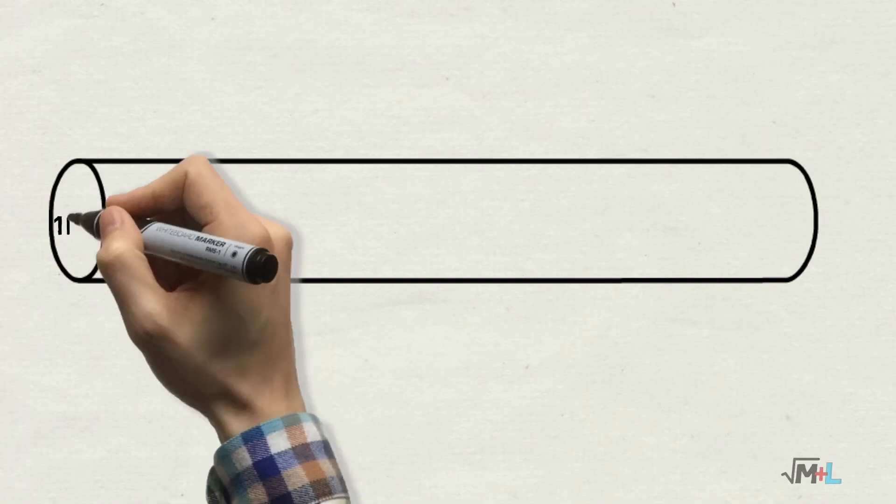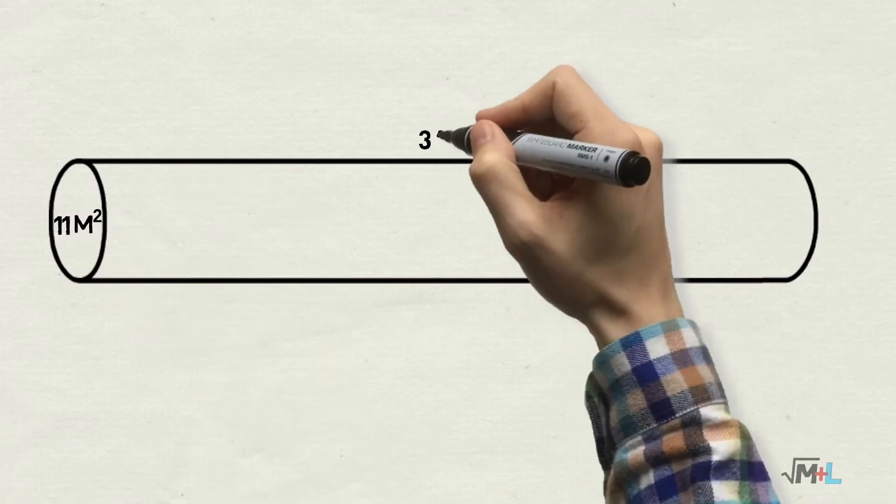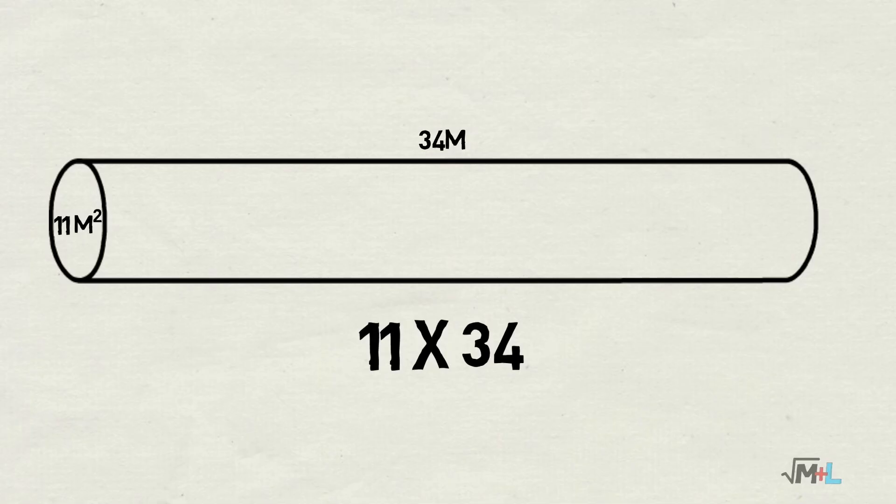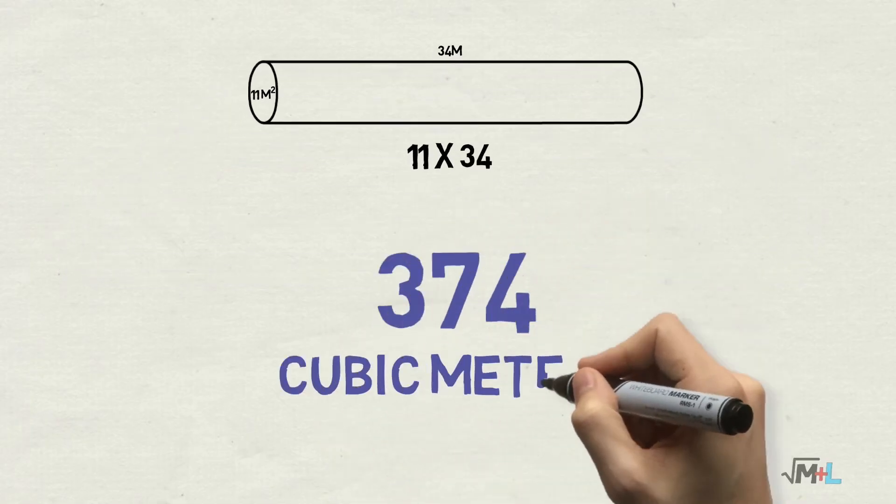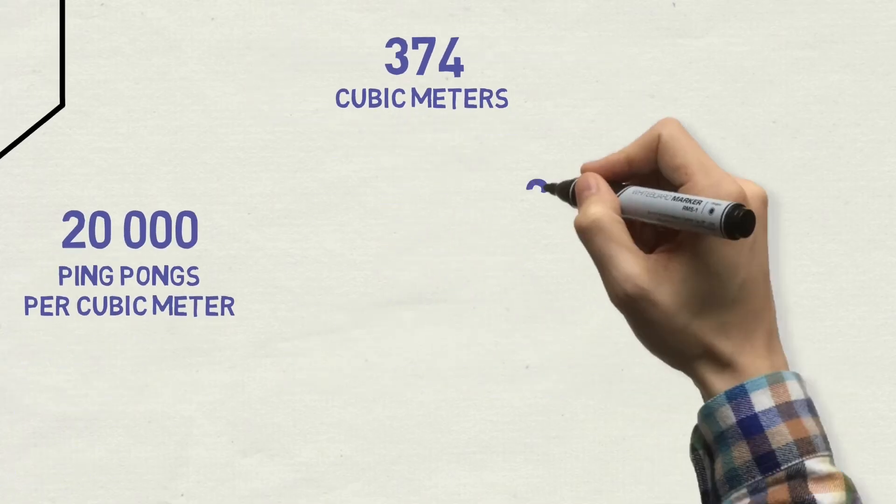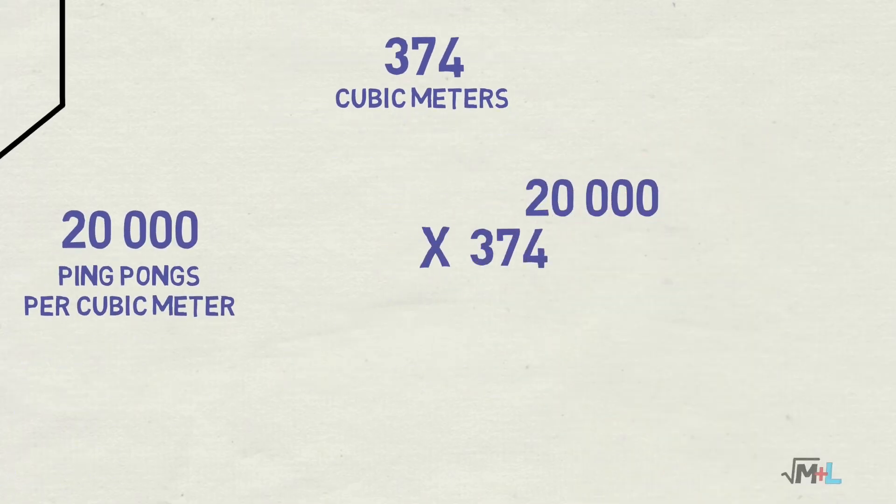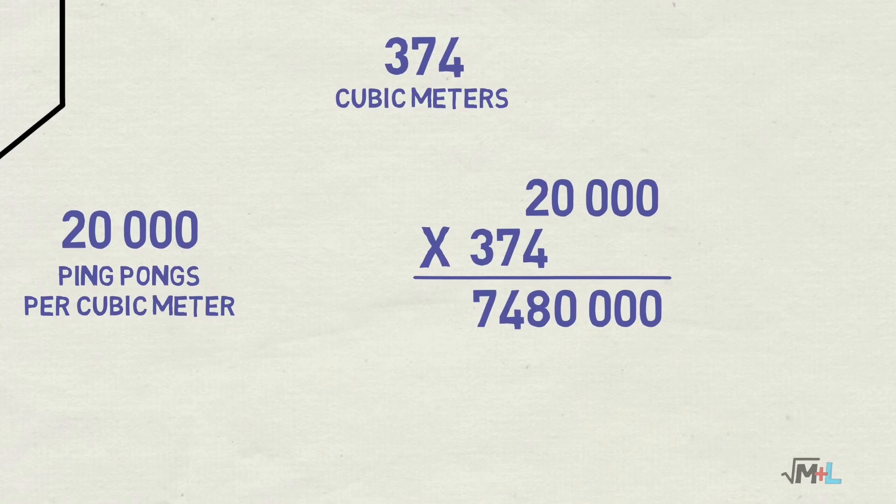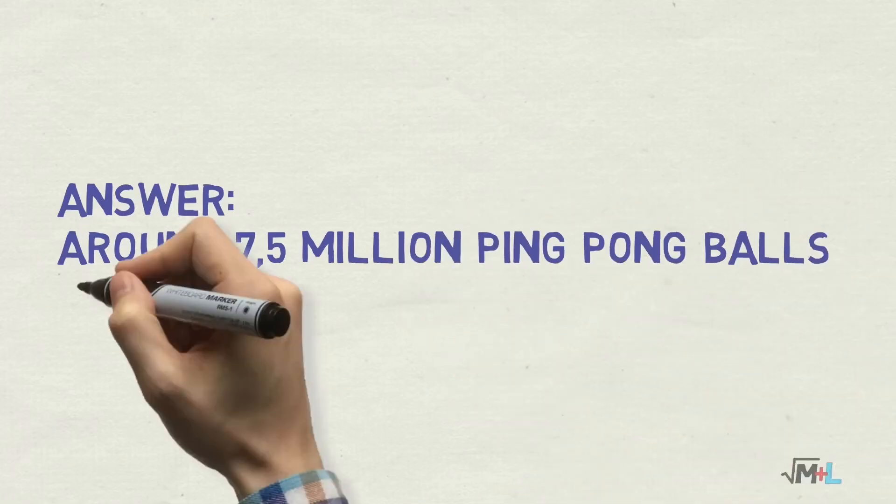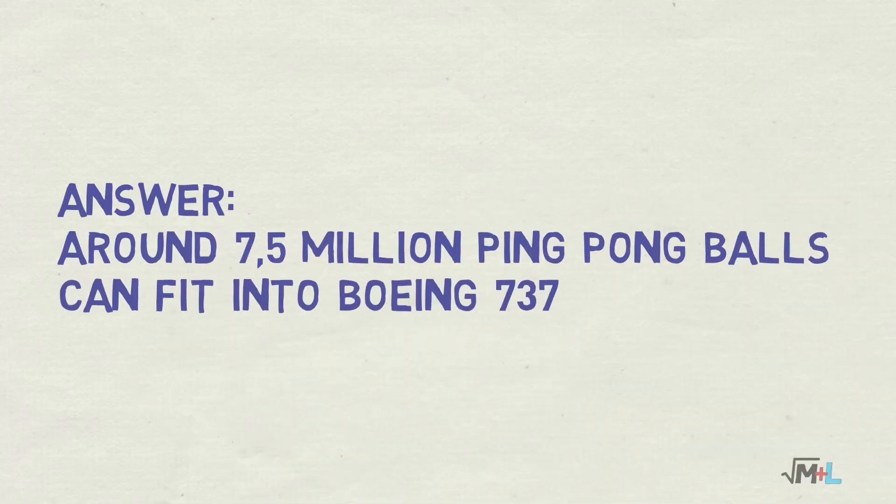So area of the cross section is around 11 square meters. Volume of our cylinder is that area times the length, so 11 times 34. 340 plus 34. In total it's 374 cubic meters. Cherry on the top is multiplying 20,000 by 374. Let's remember 4 zeros and multiply 374 by 2. It's 748. Add 4 zeros it's 7,480,000, so basically 7.5 million and that is our final answer. Around 7.5 million ping pong balls can fit into Boeing 737.